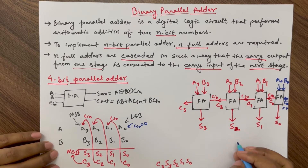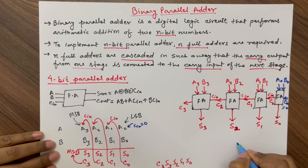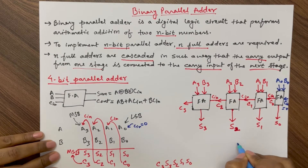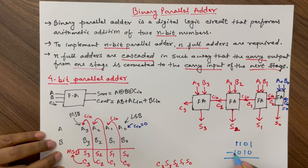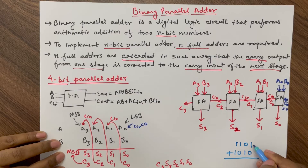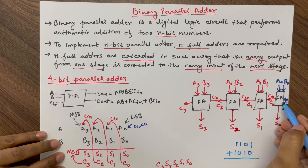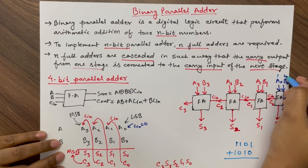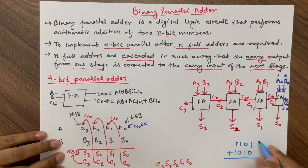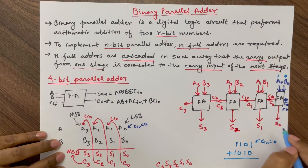Let us take one example. Suppose we have to add two 4-bit numbers: the first number is 1101 and the second number is 1010. The LSBs of these two numbers, which are 1 and 0, will be given to the first full adder. C-in for the first stage is 0.